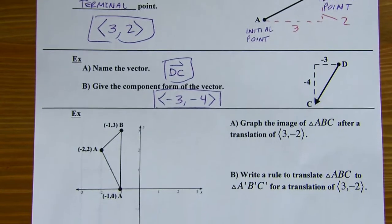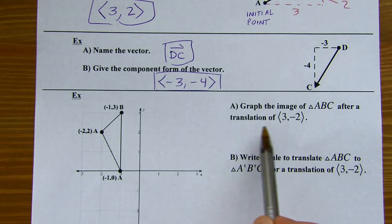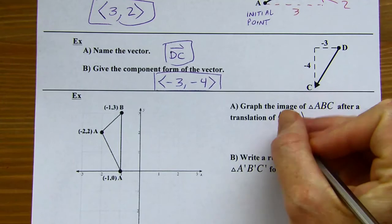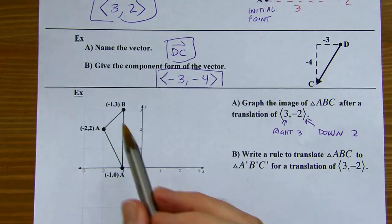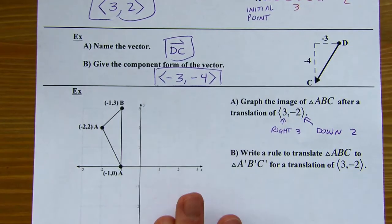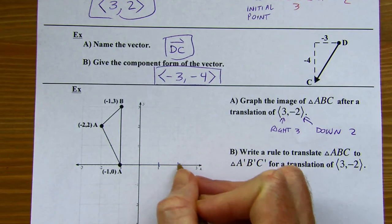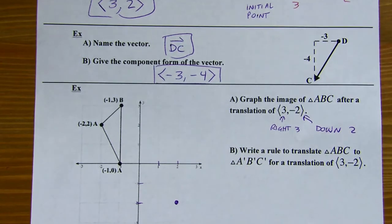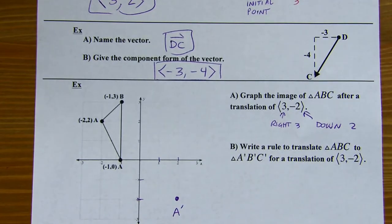We can use vectors to do translations. I've got this triangle already graphed, and the problem says to graph the image of triangle ABC after a translation over this vector — which tells me I'm going right three and down two. That means I take the entire triangle and shift it three units to the right and two units down. The easiest way is to take each corner one by one. I'll take point A, go three right and two down. There's my new point A, which I label A-prime. The little dash — prime — means this is the new point.